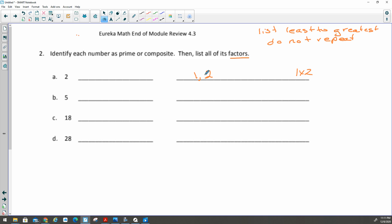Are there any other ways to multiply to get 2? There are not. So since there are exactly 2 factors, this number is prime. That's actually kind of special because 2 is the only even number that is prime, because all of the other even numbers will be composite because they have factors of 2.